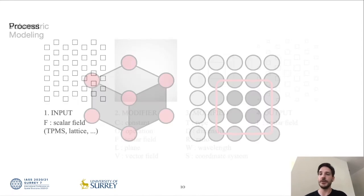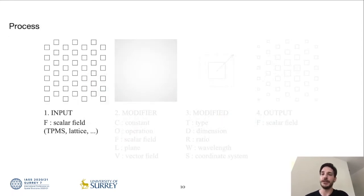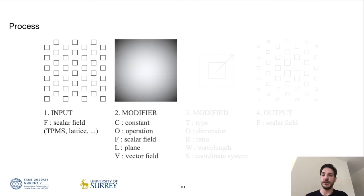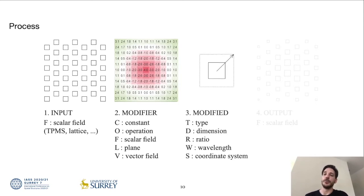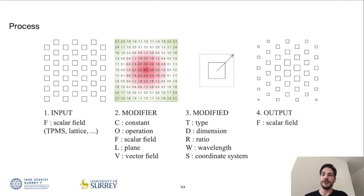We present a broad palette of methods to take an initial unmodified field as an input. Again, this can be anything, but we present it on the example of a TPMS lattice, pair it with a modifier. This can be a constant, a mathematical operation, or a geometric object, or another field, which then is used to modify certain aspects of the input, like dimensions, wavelength, or orientations, to obtain an altered output with different physical properties and potentially a better performance.